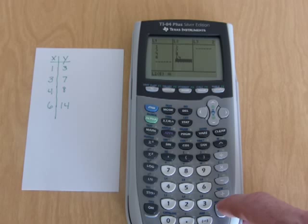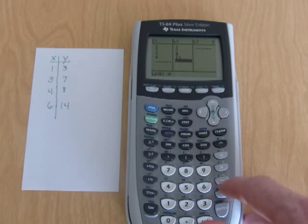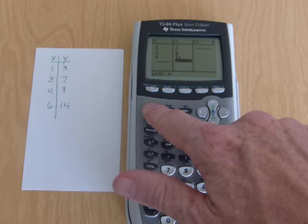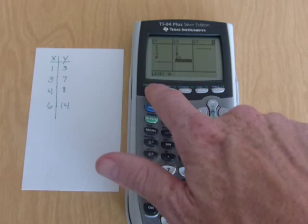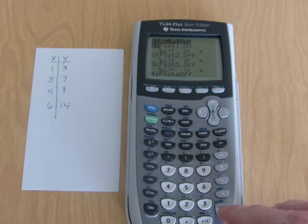Once I have those values entered, I want to take a look at the graph to see if a linear fit does make sense. So I hit second and the y equals button and above it is stat plot. I'm going to choose number one. I've got three different plots to choose from. I'm going to put this in plot one.